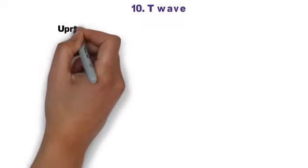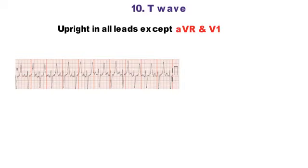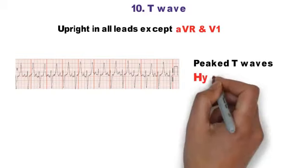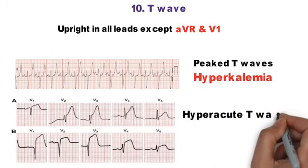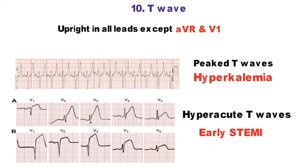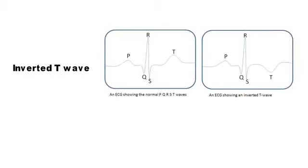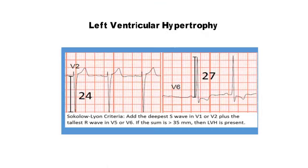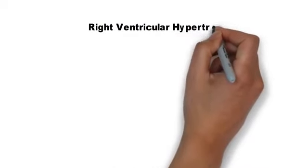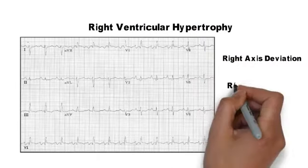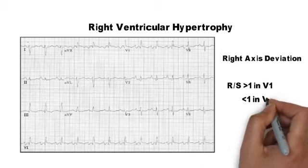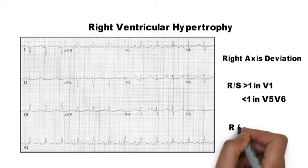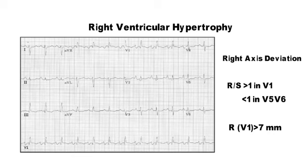Step 10 is T-wave, which is upright in all leads except aVR and V1. Tall, narrow, symmetrically peaked T-waves are seen in hyperkalemia. Broad, asymmetric, hyperacute T-waves are seen in early STEMI. Inverted T-waves occur in myocardial ischemia, infarction, or ventricular hypertrophy. For left ventricular hypertrophy, if the deepest S-wave in V1 or V2 plus tallest R-wave in V5 or V6 exceeds 35 mm, LVH is present. In right ventricular hypertrophy there is right axis deviation, R:S ratio >1 in V1, R:S ≤1 in V5/V6, and R-wave in V1 >7 mm.